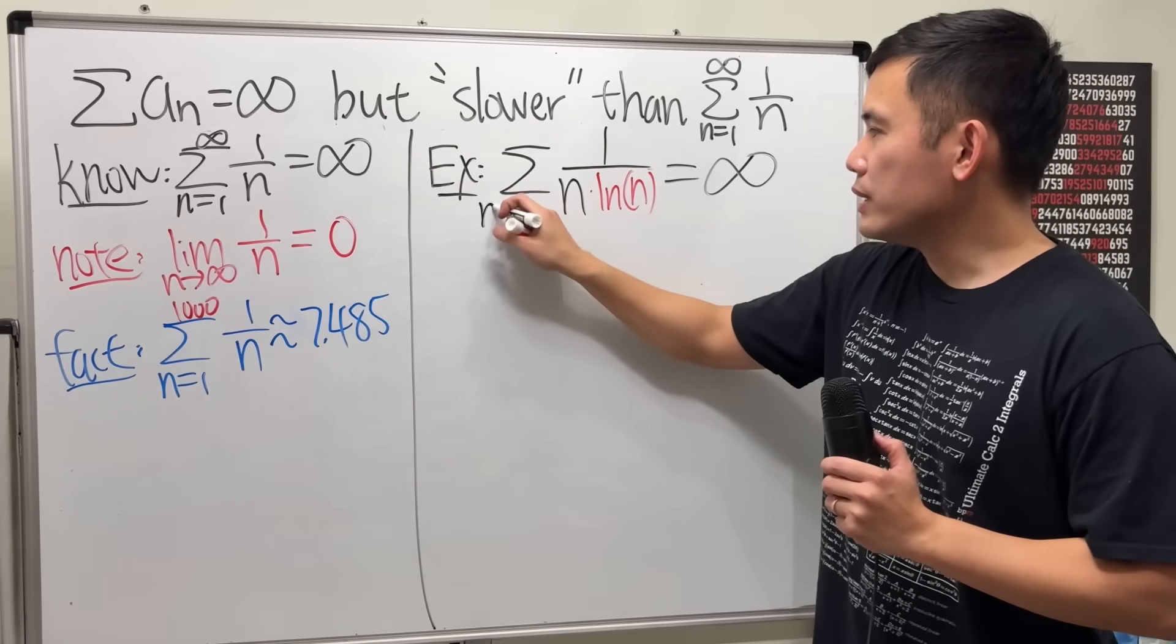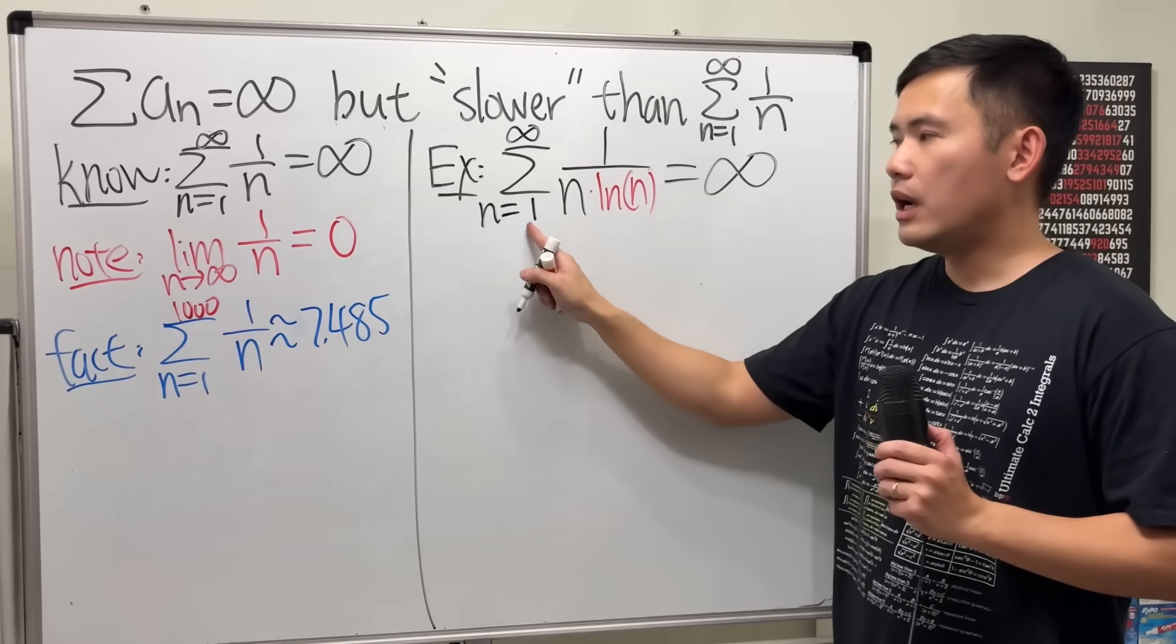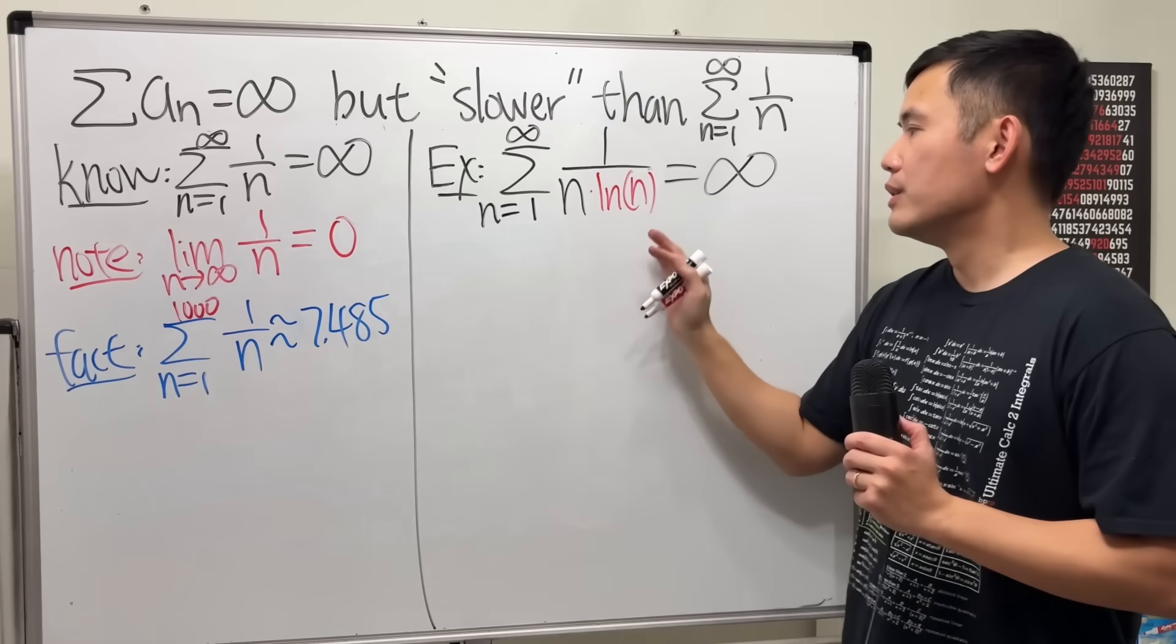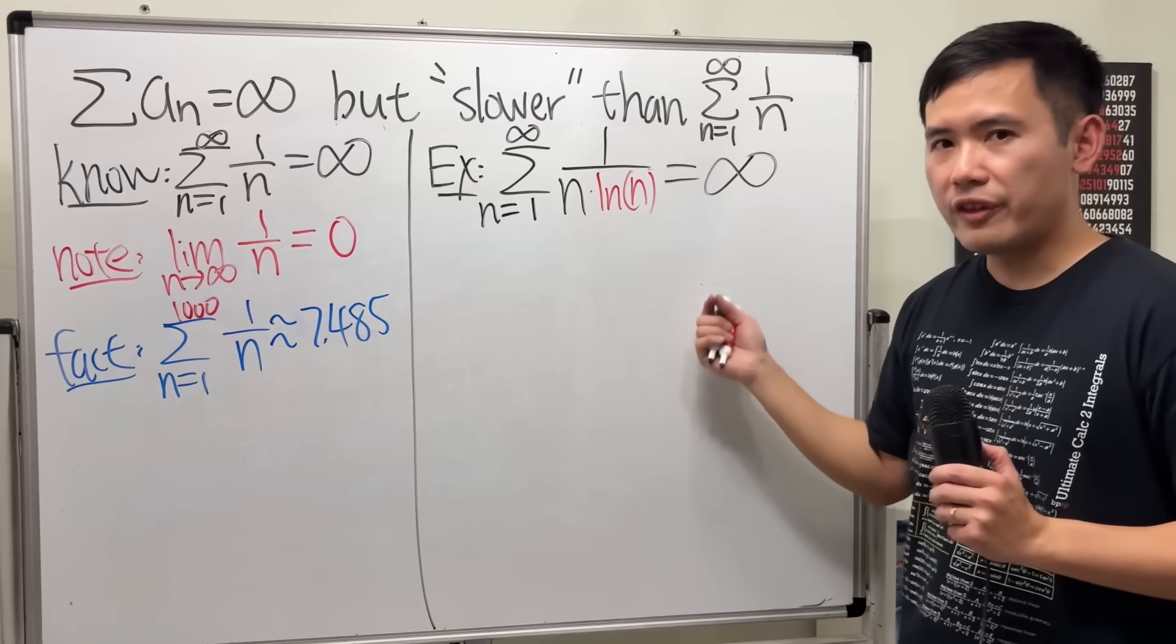If I go with n equals 1 to infinity because I pick ln n, ln 1 is not defined. That's not good. You might say, hey, just do ln of n plus 1. Sure thing.